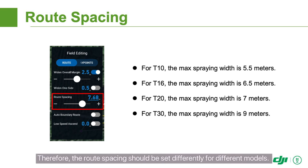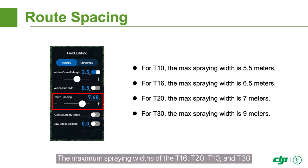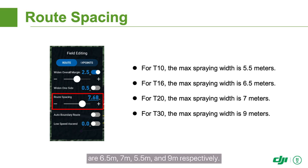Therefore, the row spacing should be set differently for different models. The maximum spraying widths of the T-16, T-20, T-10, and T-30 are 6.5 meters, 7 meters, 5.5 meters, and 9 meters respectively.